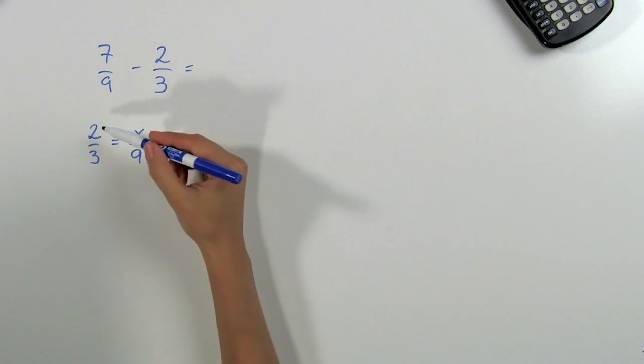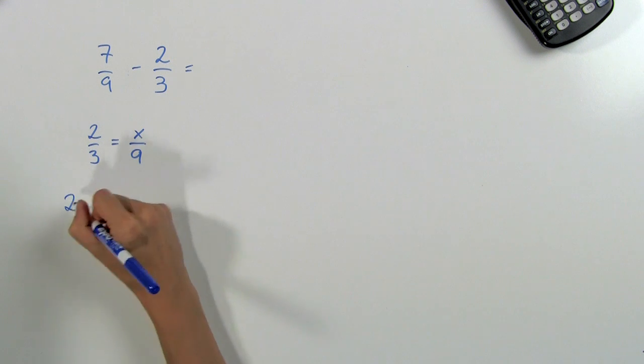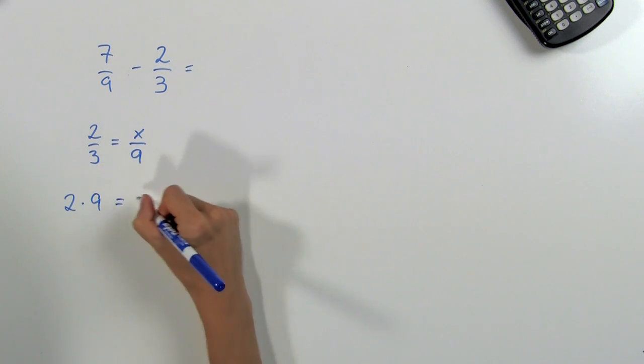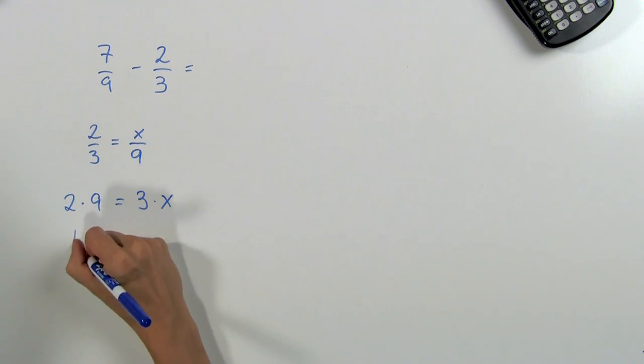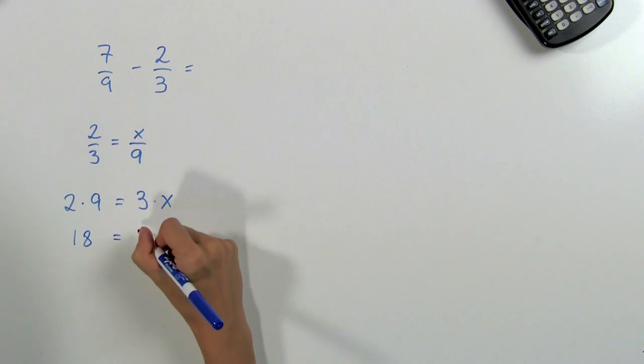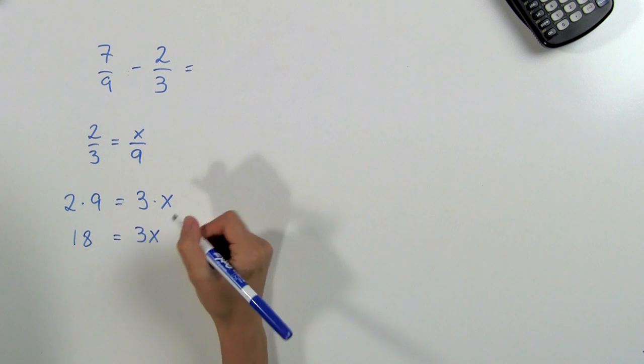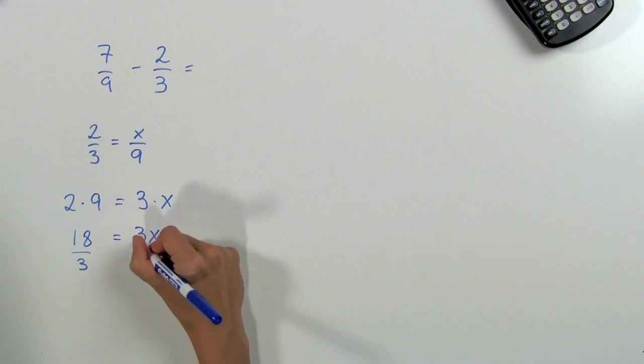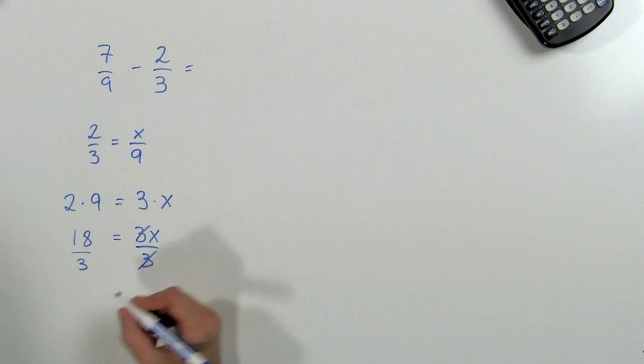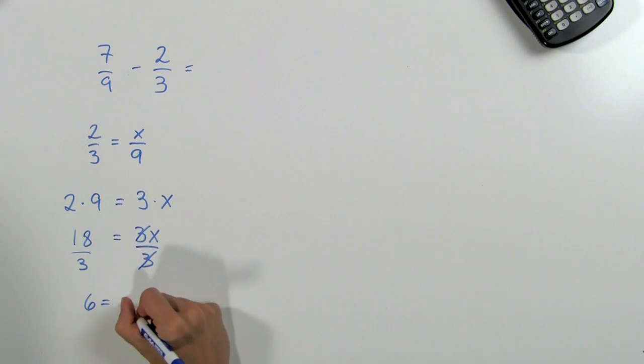When we multiply opposite diagonals, we'll get 2 times 9 is equal to 3 times x. Now we can multiply: 2 times 9 is 18, which equals 3x. Divide both sides by 3. The 3s cancel out, and we're left with 6 is equal to x.